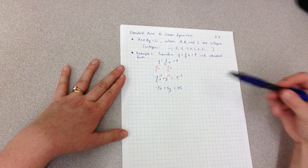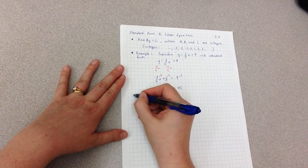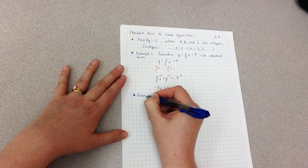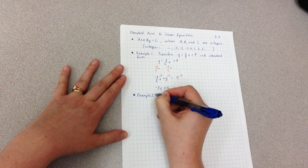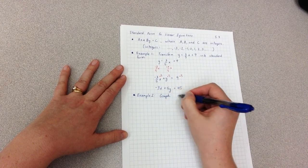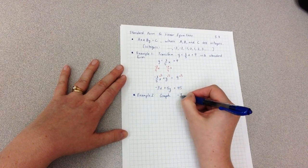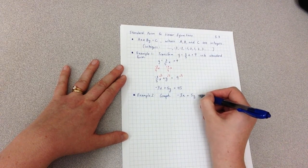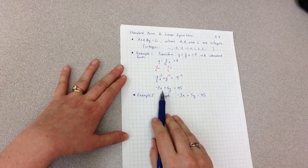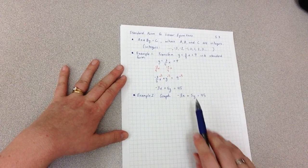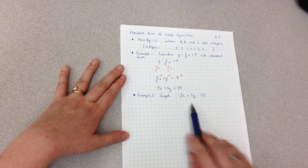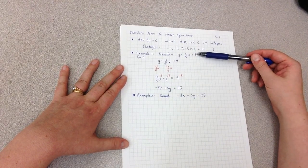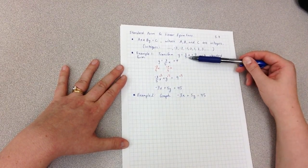Example 2: Graph negative 3x plus 5y equals 45. I'm graphing this exact equation. Now we're very familiar with graphing lines when they're in this form, in slope intercept. We take our intercept, we use our slope.